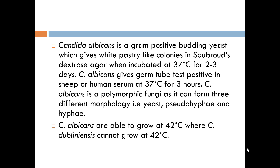Candida albicans shows gram-positive budding yeast. When cultured, it produces white pasty-like colonies on Sabouraud dextrose agar. The colonies can be seen within two to three days when incubated at 37°C. After finding the white pasty-like colonies, gram staining is performed to confirm gram-positive budding yeast.